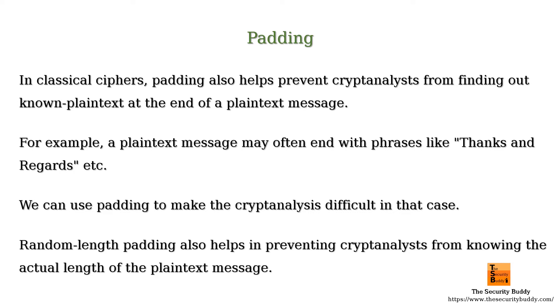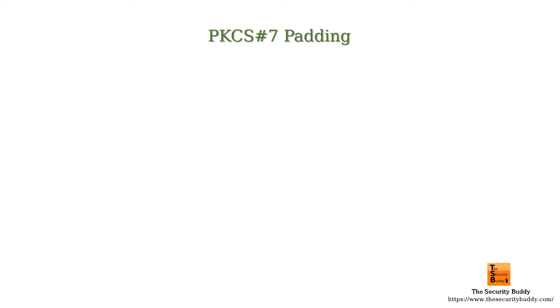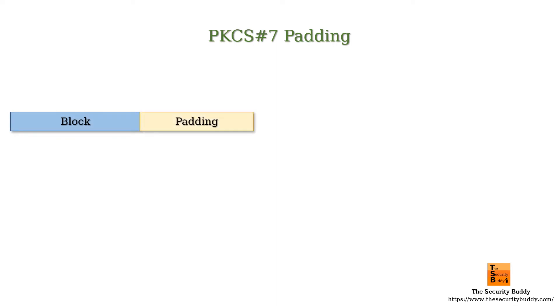We can use several padding methods for our purpose. PKCS7 is one such padding method. In PKCS7 padding the block length can be anything between 1 to 255 bytes and the padding is in whole bytes.